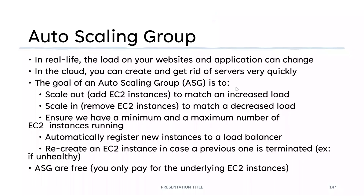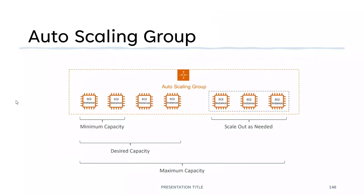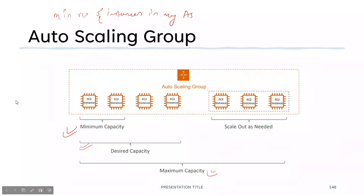Now we understand what an Auto Scaling Group is. Let us see a diagram. There are certain components: minimum capacity, desired capacity, and maximum capacity. The minimum capacity basically says the minimum number of instances in the ASG — for example, you want two instances minimum. That is your minimum capacity.